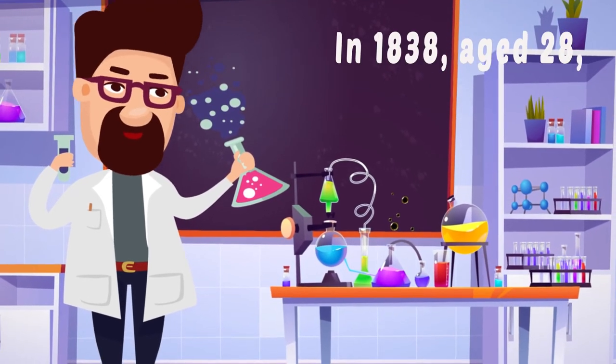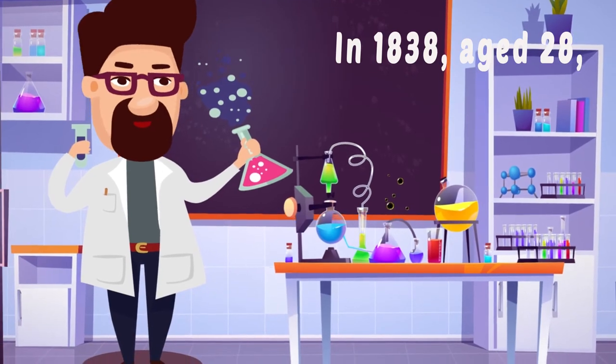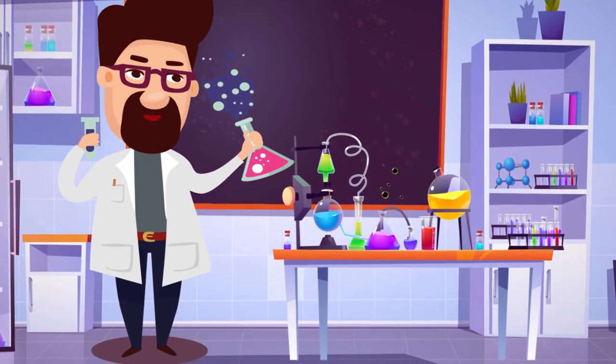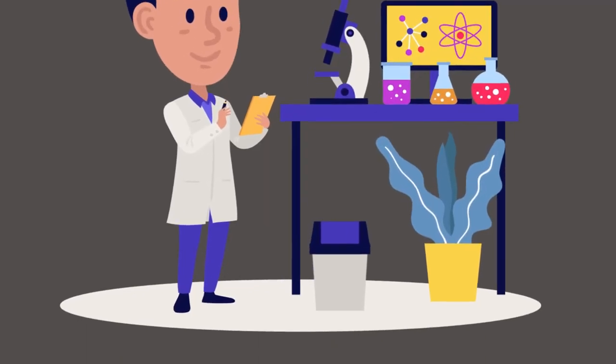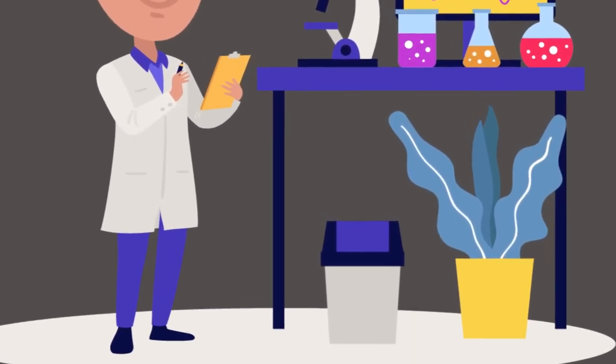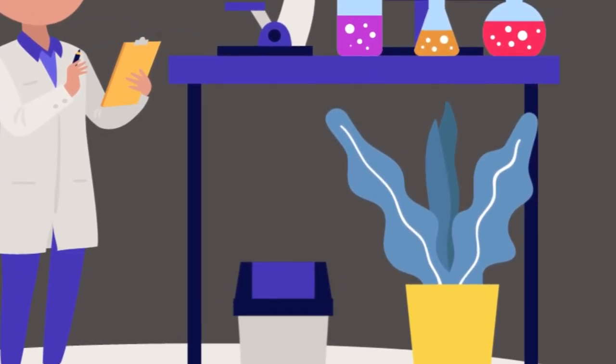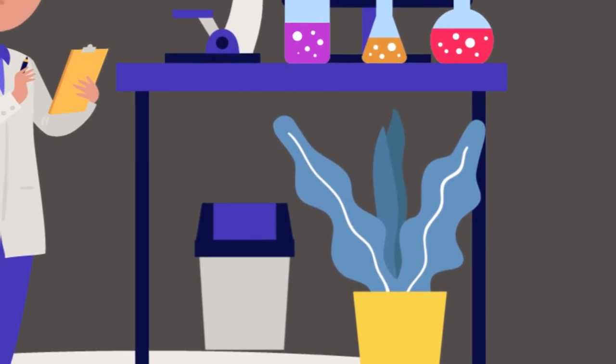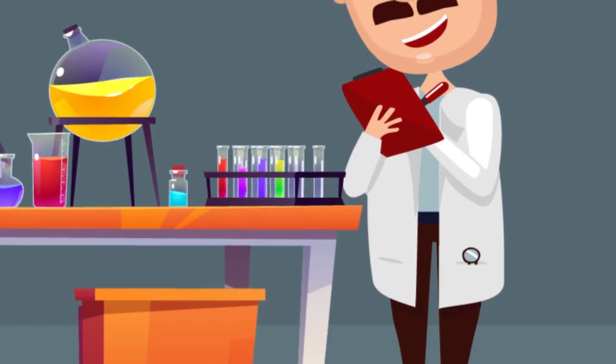In 1838, aged 28, Schwann felt confident enough about his evidence for the cell doctrine to present it to the academy in Paris. The following year, he published his momentous book, Microscopical Researches into the Accordance in the Structure and Growth of Animals and Plants.